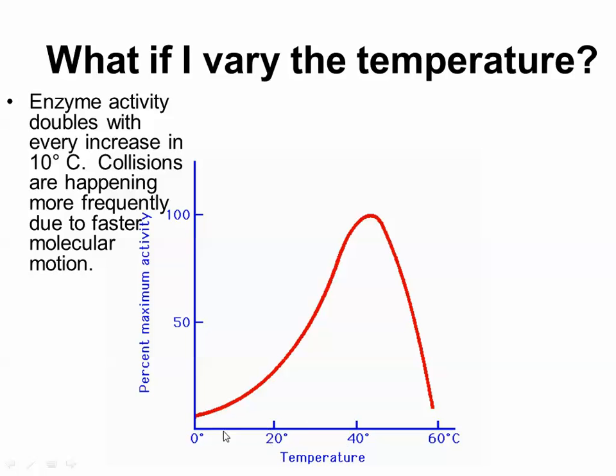So the temperature increasing means there's more energy for these particles, these enzymes, and the substrate to actually bump into each other, so they're moving around more violently, and they bump into each other more, and the more they bump into each other, the more of these enzyme substrate actual combinations are actually happening, and it's going to increase and increase and increase up until we reach a particular point. In this case, now the energy is so high that it's not just increasing the rate of the collisions, but it's actually starting to mess with the bonds inside the enzyme.